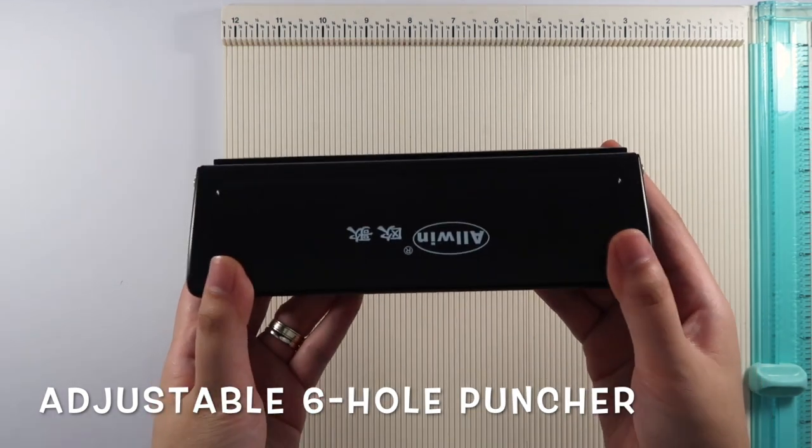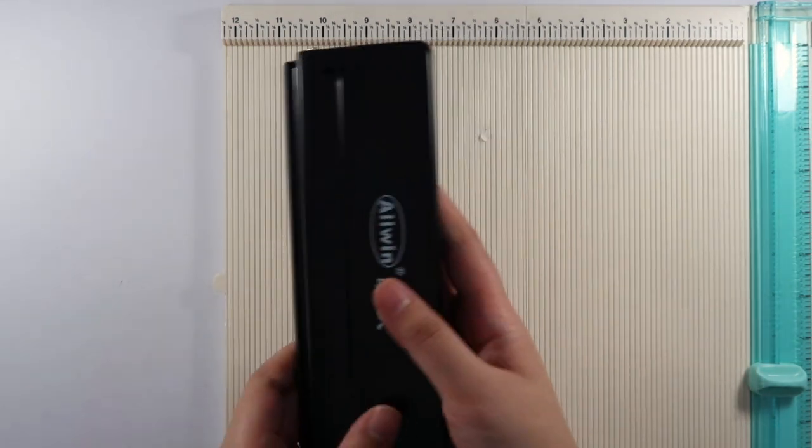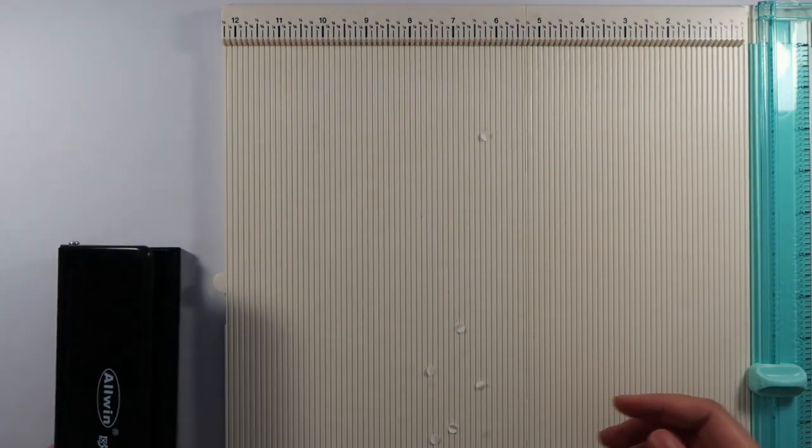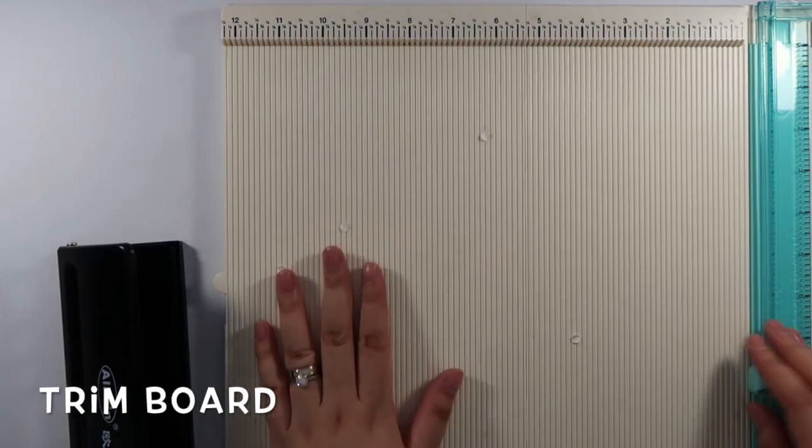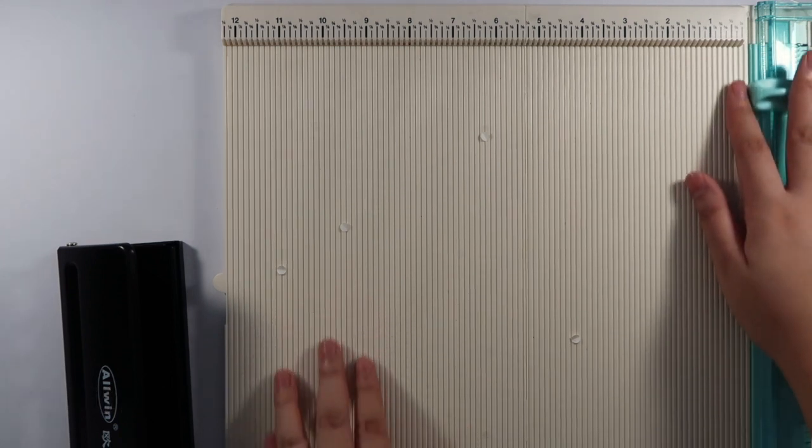Next, we'll have the adjustable six-hole puncture which is set for A6. These types can also be set for A7 and A5 liners. Then I'll use a trim board to make it easier to measure and cut. This is the We Are Memory Keepers trim and scoreboard.